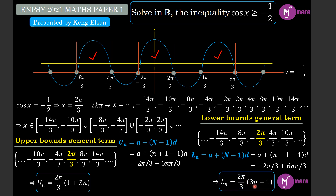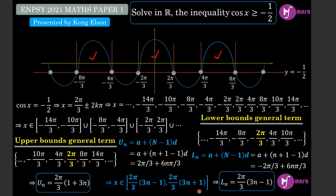We test the lower bound formula: when n equals zero, we get 2π/3 times negative 1 which is negative 2π/3 — correct. When n is 1, we get (3 minus 1) times 2π/3 equals 4π/3. When n is 2, we get 5 times 2π/3 equals 10π/3. For negative n: when n is negative 1, we get negative 4 times 2π/3 equals negative 8π/3. When n is negative 2, we get negative 7 times 2π/3 equals negative 14π/3. The formula is correct.